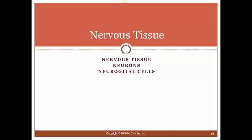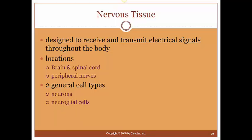In nervous tissue, we're going to look at the two types of cells: neurons and neural glial cells. The whole goal of nervous tissue is to rapidly transmit information back and forth in the body. Information is going to be sent to the central nervous system from the peripheral nervous system, and the central nervous system is going to receive that information.